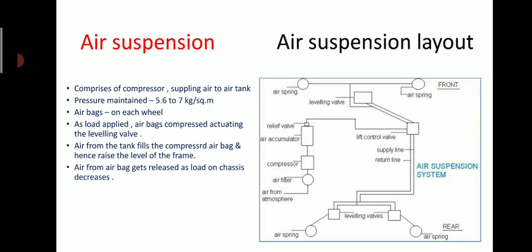This is the layout of the air suspension system. In this system you will clearly see various components — front and rear wheels — and between them there is use of a compressor, air filter, relief valve, and leveling valves. The air suspension system comprises a compressor supplying air to an air tank in which pressure is maintained between 5.6 to 7 kg per square centimeter. Air bags are utilized on each wheel.